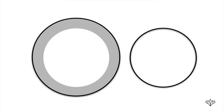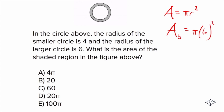The area of any circle is π r squared. For the big circle, it's going to be π r squared, where r is six, because it says the radius of the larger circle is six. So we do π times six squared, which is 36π.